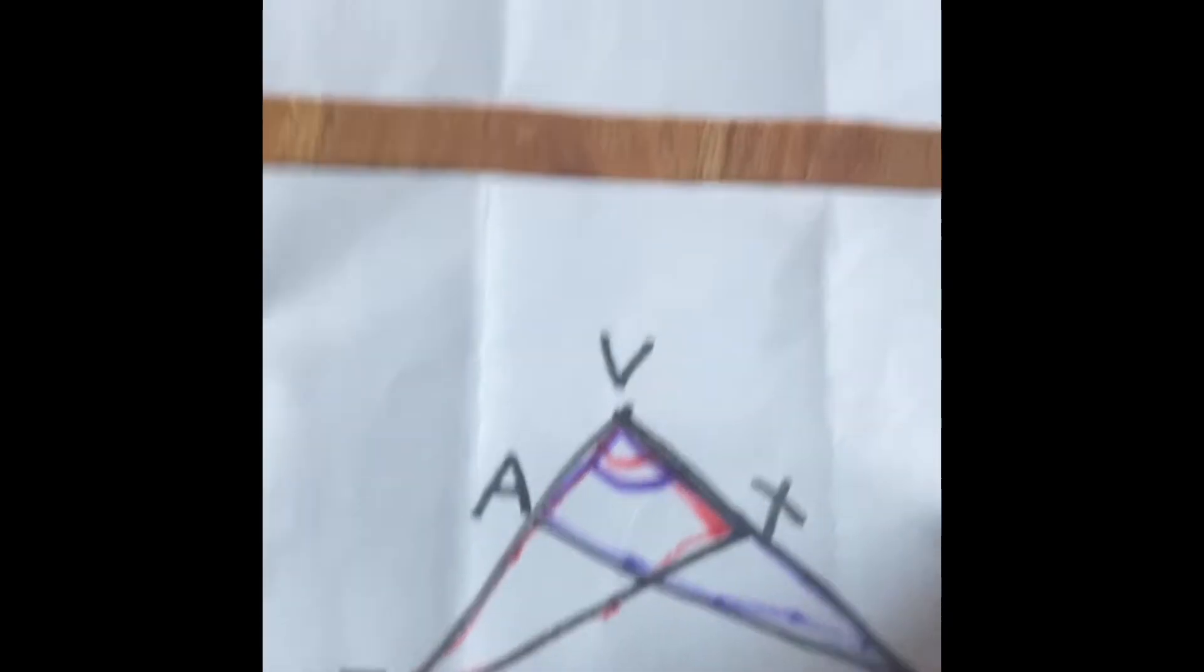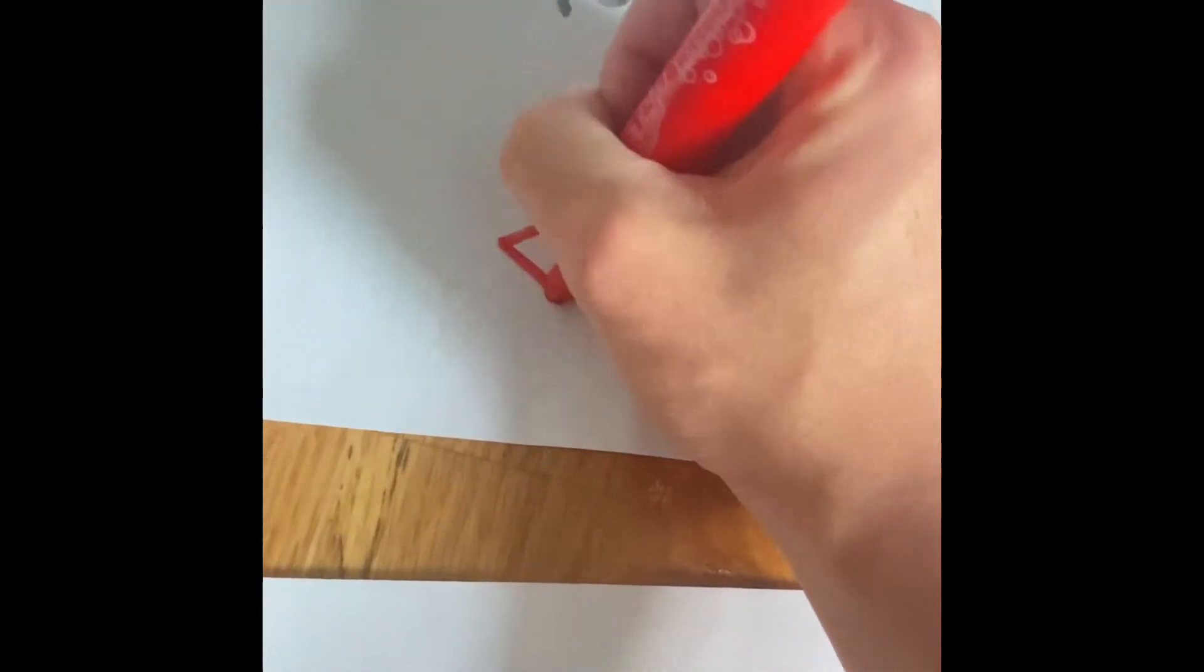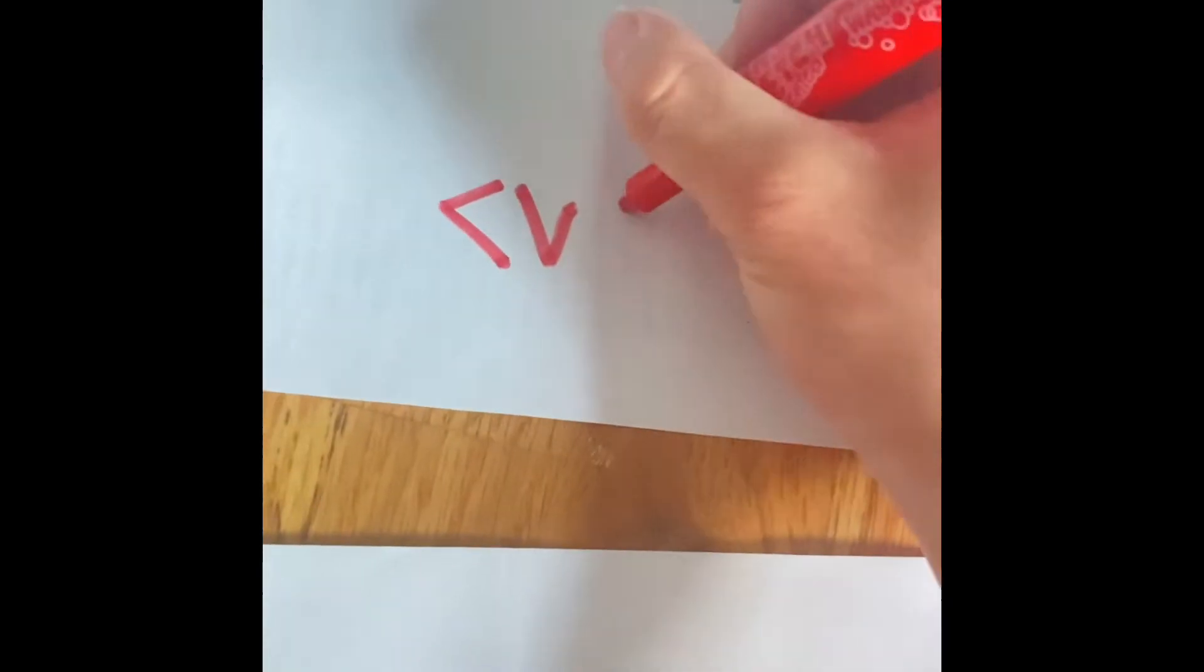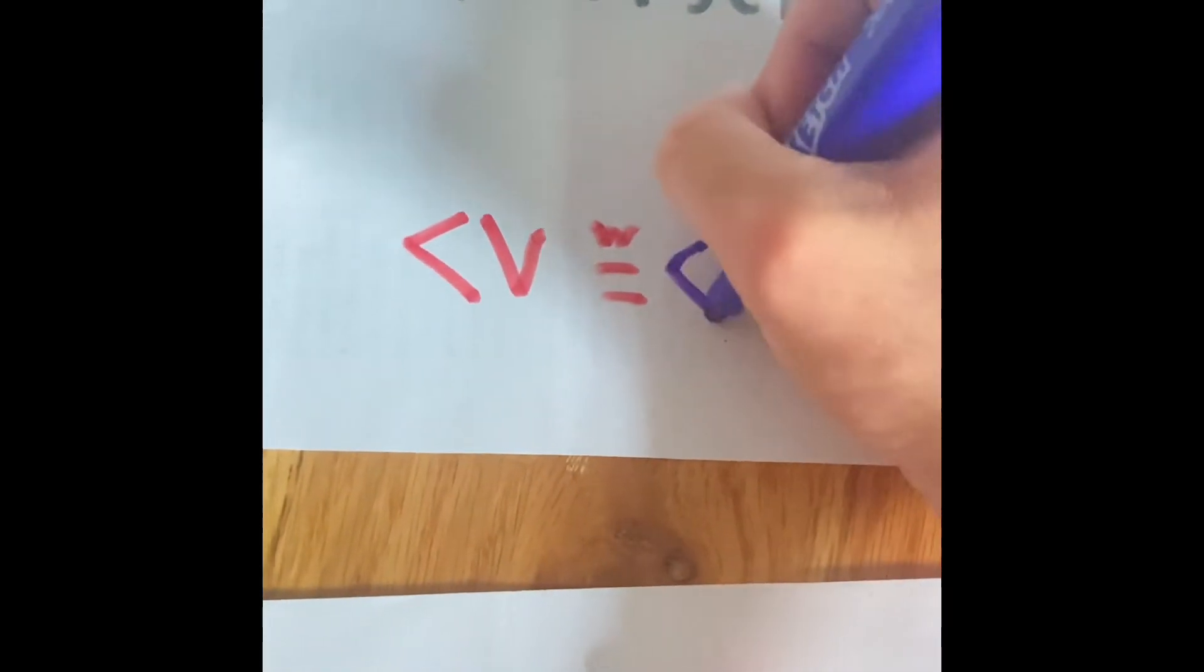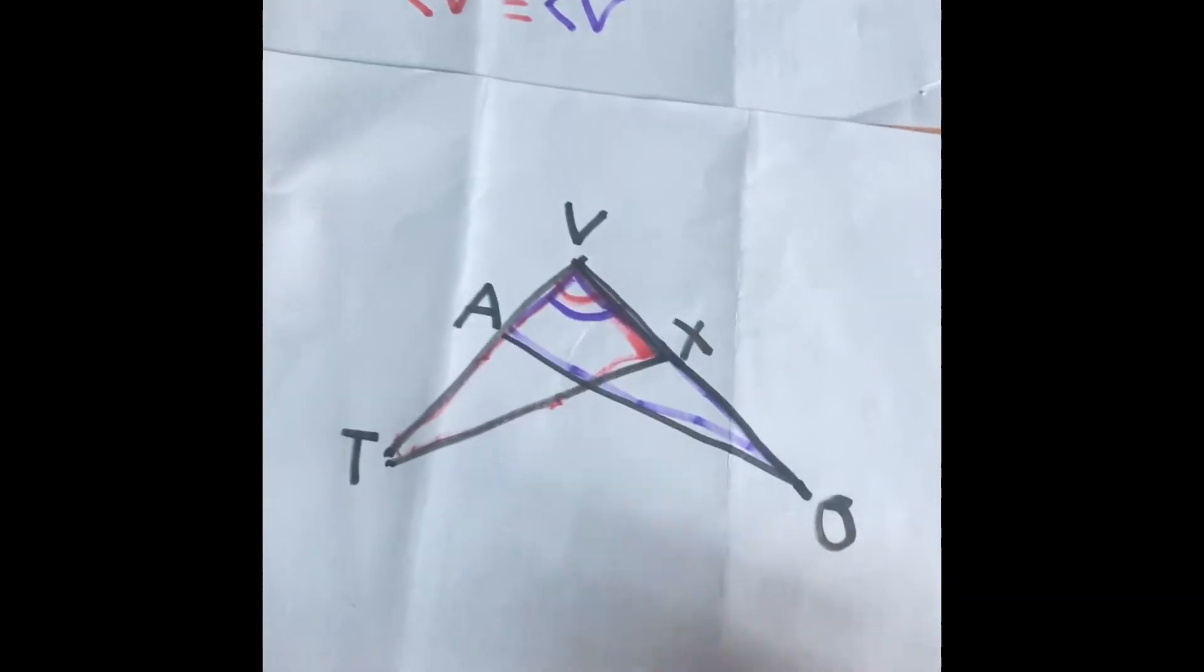So we can directly say that since it's congruent to itself, angle V is going to be congruent to angle V. But why do we even need this property?